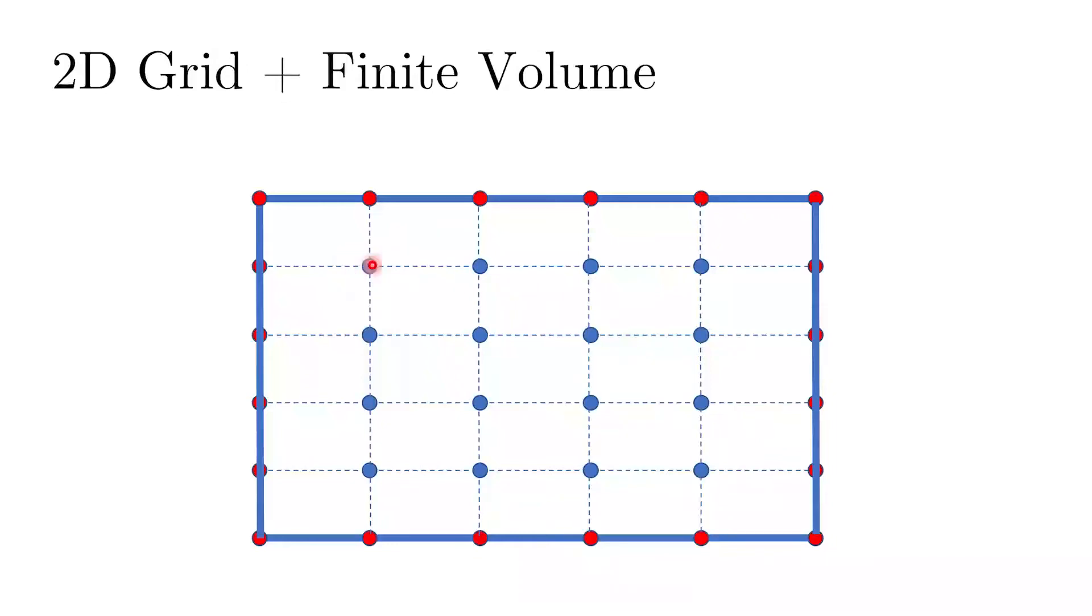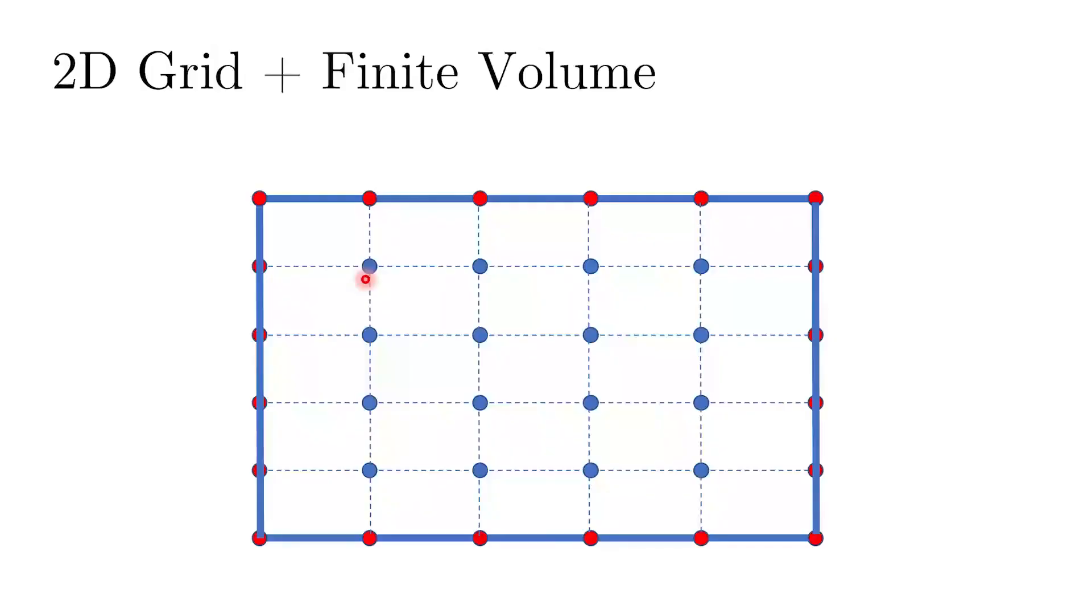And correspondingly to each boundary point, when you draw a vertical or a horizontal line, that defines your 2D grid system. So wherever two of these lines would intersect, we would have another point at that particular location. So these points are typically called as interior points to that domain. Just like in the one-dimensional system, we had two points on the boundary and we had multiple interior points.